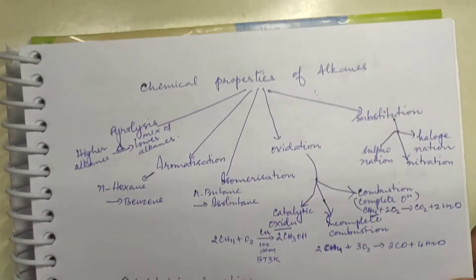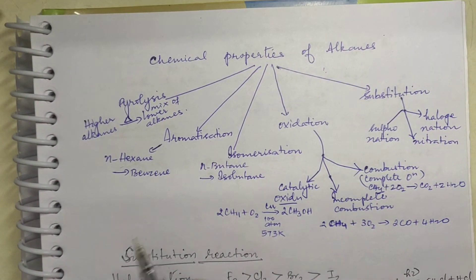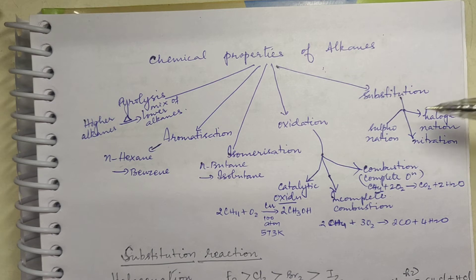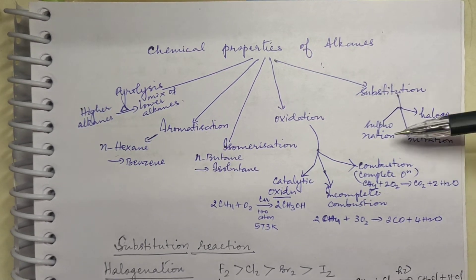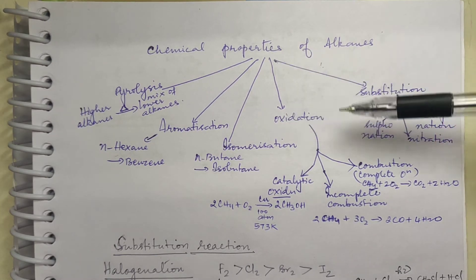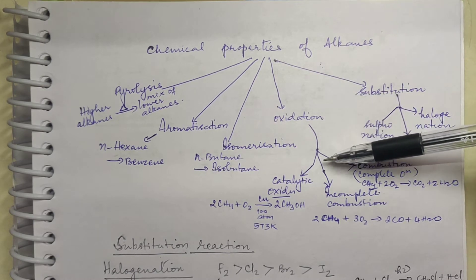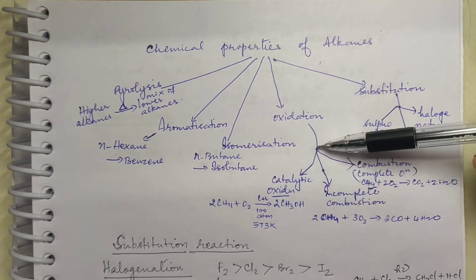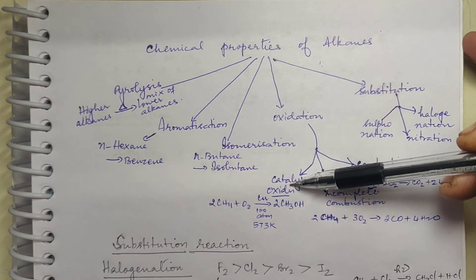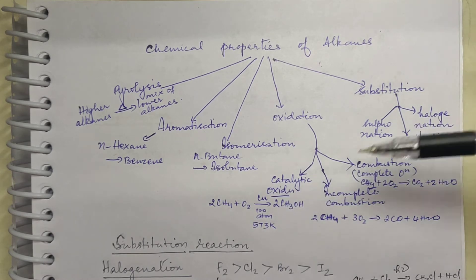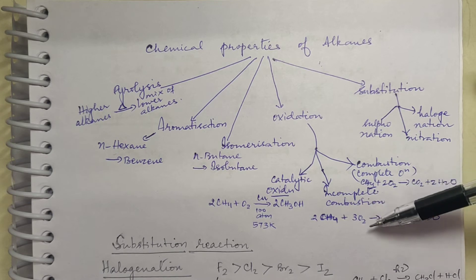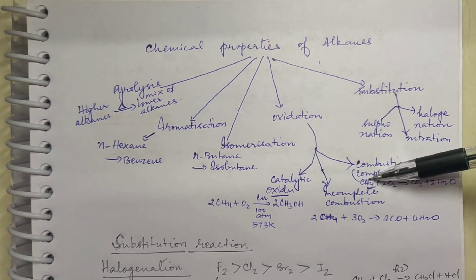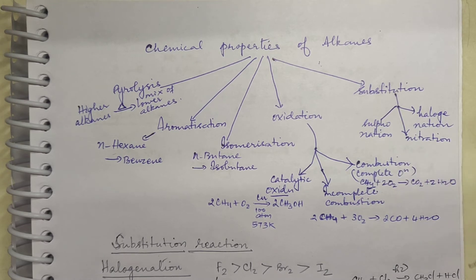Under chemical properties, we study substitution — which includes halogenation, nitration, and sulfonation — and oxidation. Under oxidation there are three types: complete oxidation (combustion), incomplete combustion, and catalytic oxidation. Catalytic oxidation takes place in the presence of a catalyst. Incomplete combustion occurs when the amount of oxygen supplied is insufficient. Complete combustion occurs when fuel and oxygen are in proper proportion.